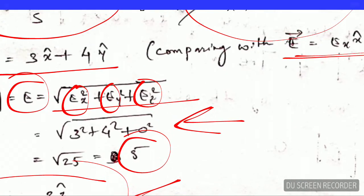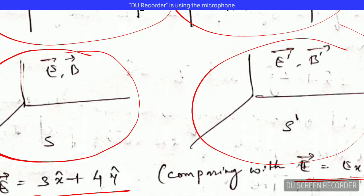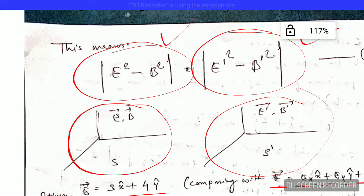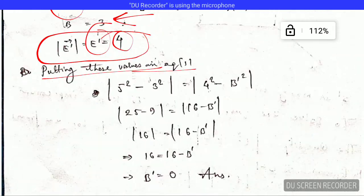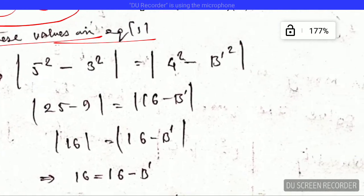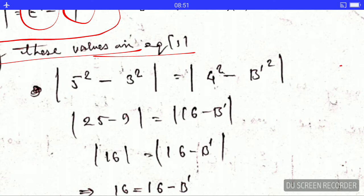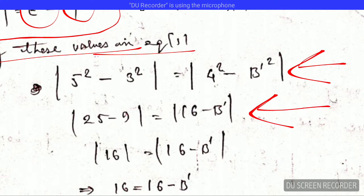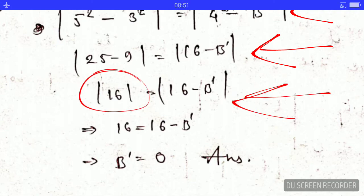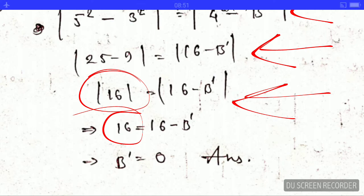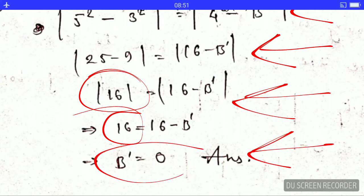Now putting all these values back into equation 1 — the invariant E² − B² = E prime² − B prime² — we plug in E = 5, B = 3, and E prime = 4. Simplifying step by step, we find that B prime² equals 0, and therefore the value of B prime equals 0. This is the answer.